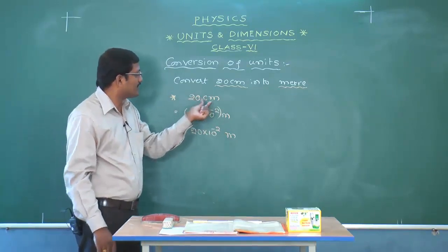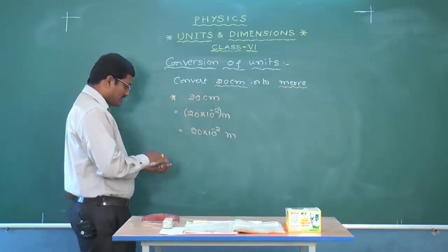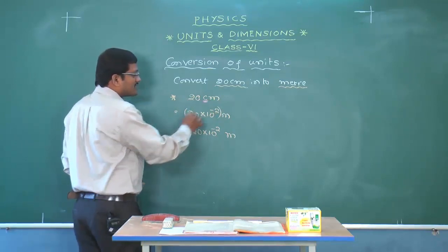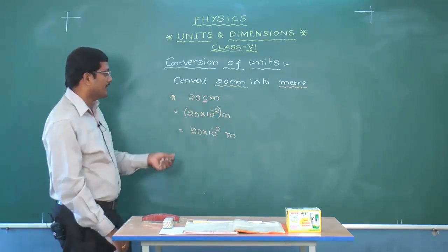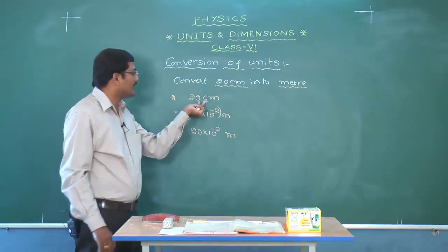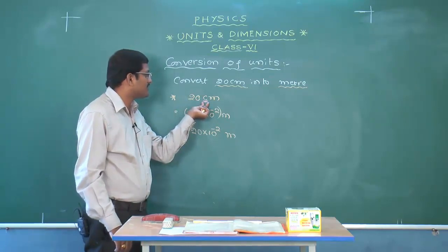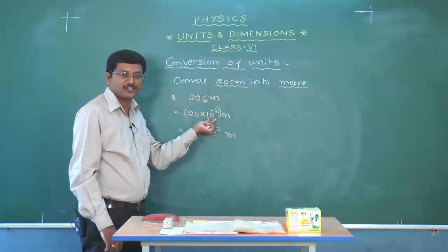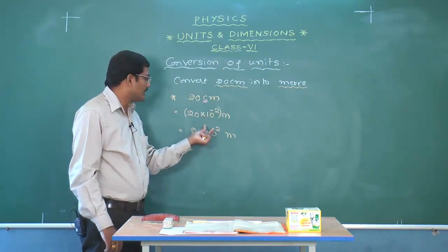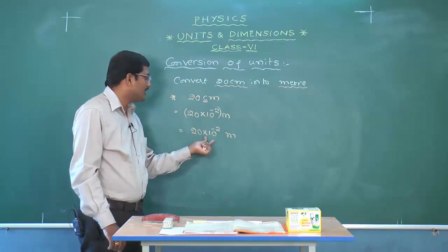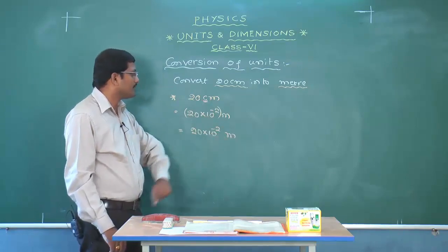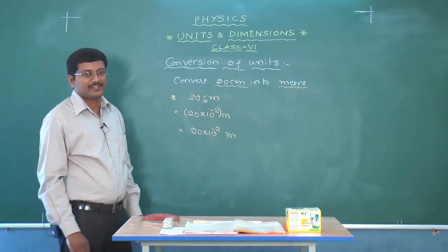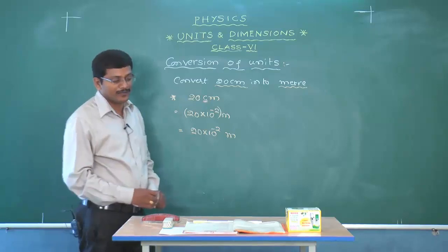So from the 20 centimeters, just concentrate on that C because it is a submultiple of meter. The prefix 'centi' means 10 to the power of minus 2. Substitute that value for C and it will obviously be converted into meters. It is a very easy, first-level problem.